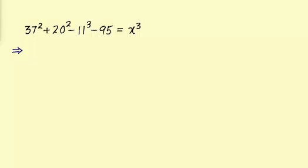As unit digit of 37 is 7 and square of 7 is 49, so unit digit of 37 square is 9. Plus, unit digit of 20 is 0 and square of 0 is 0, so unit digit of 20 square is 0. Minus, unit digit of 11 is 1 and cube of 1 is 1, so unit digit of 11 cube is 1. Minus, unit digit of 95 is 5, this is equal to x cube.